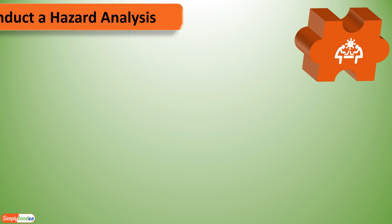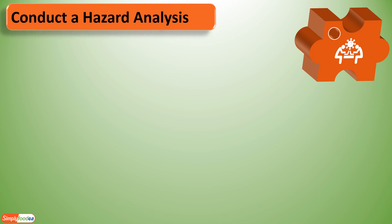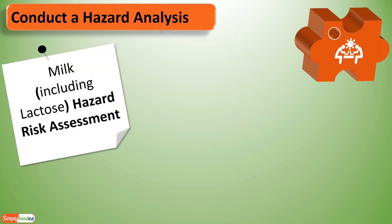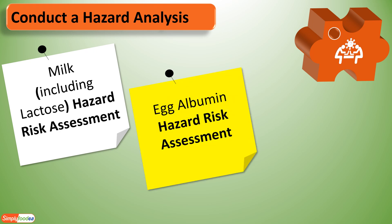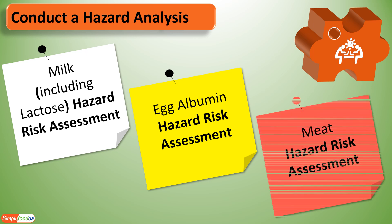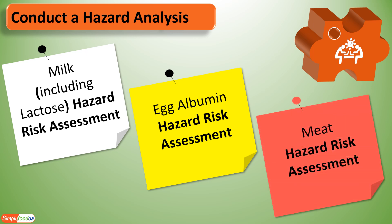Welcome back to the YouTube channel. Today we will look at examples of raw materials risk assessment, including milk with lactose, egg albumin, and meat. The milk and egg albumin are allergens, but meat is not. These examples go beyond the orange juice example to help you become more professional in raw materials risk assessment.